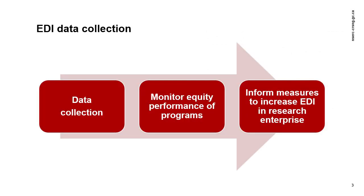In 2019, the three federal granting agencies began collecting self-identification data in an increasingly complete and consistent manner. This data is used to record participation and success rates in order to monitor equity performance of programs, and to inform policy and program decisions to achieve equitable access to research funds.